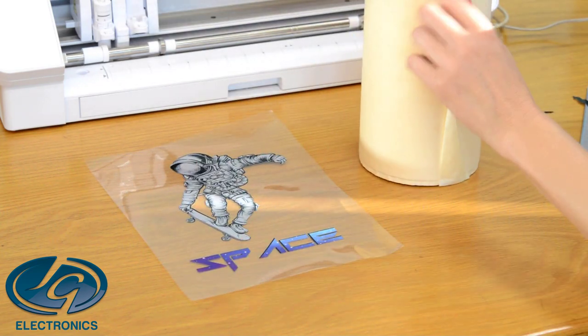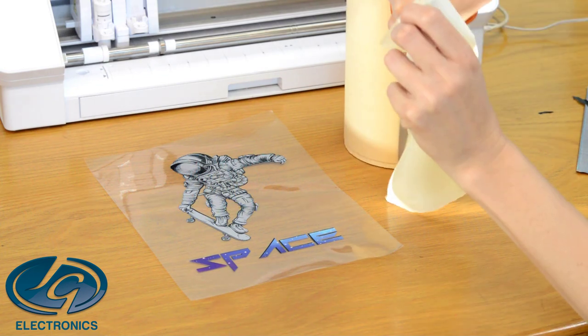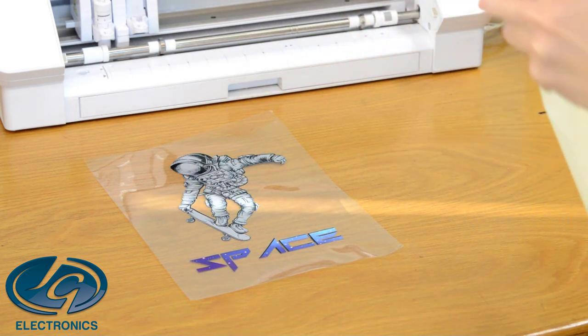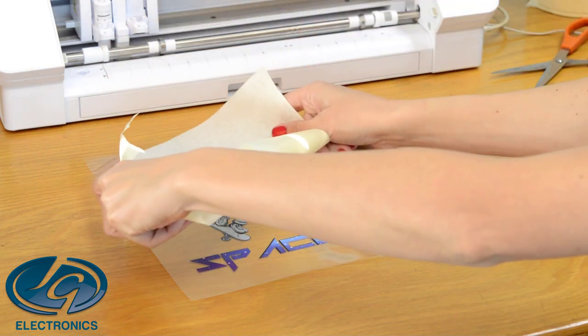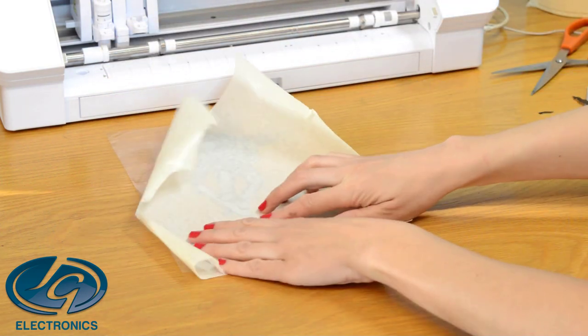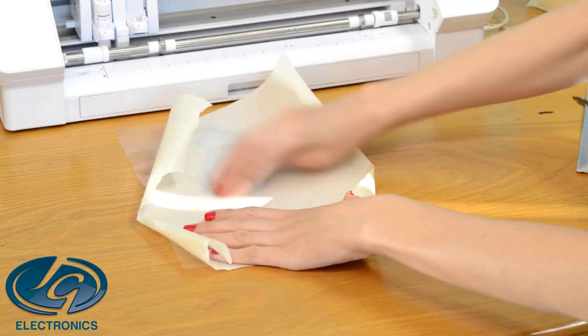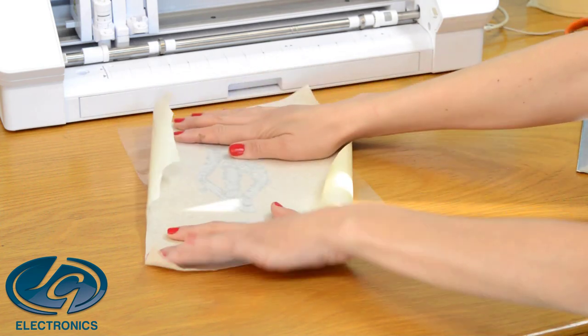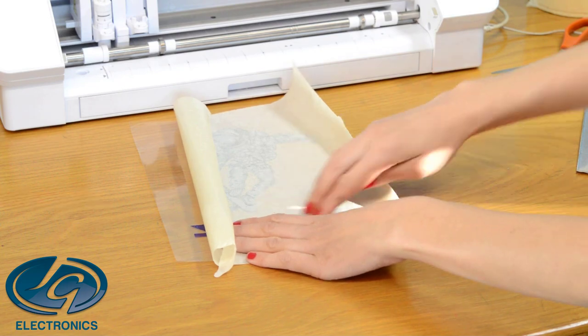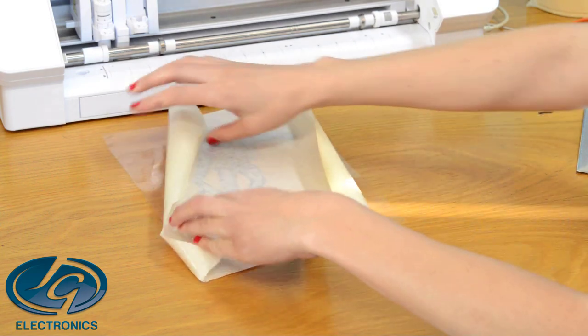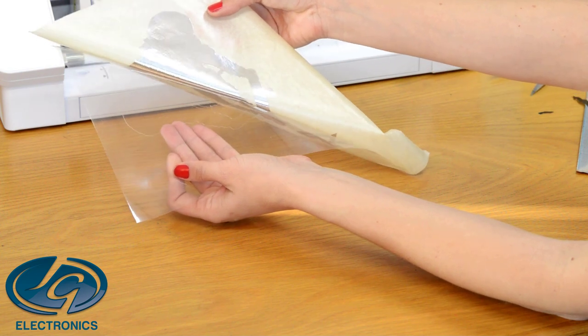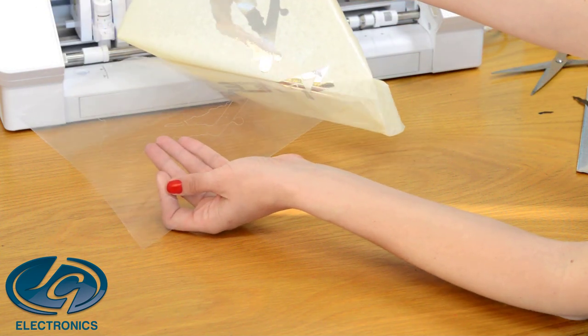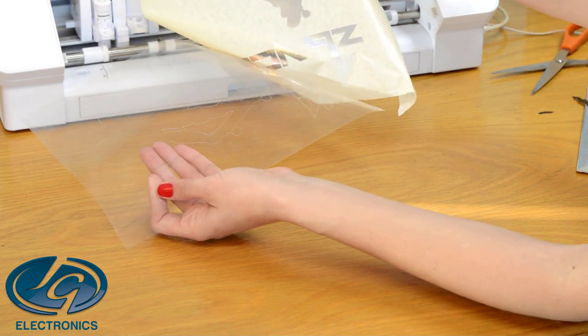We're going to do the application tape one. This is my application tape. Put it on top of your image. You need to rub it, and then we're going to lift it like that. See how it lifts with the application tape. Make sure you lift everything.